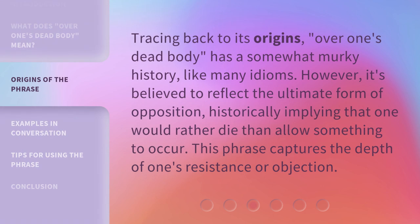Tracing back to its origins, 'over one's dead body' has a somewhat murky history, like many idioms. However, it's believed to reflect the ultimate form of opposition, historically implying that one would rather die than allow something to occur. This phrase captures the depth of one's resistance or objection.